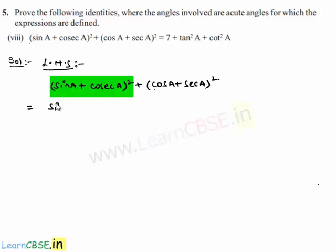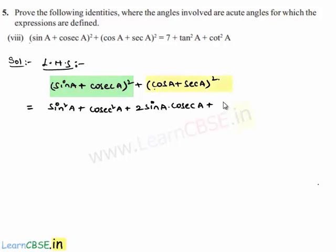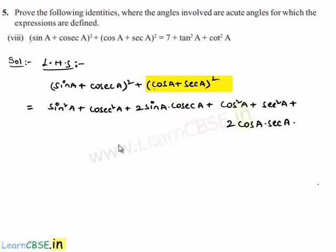Applying the expansion, we get sin squared a plus cosecant squared a plus 2 sin a into cosecant a, plus cos squared a plus secant squared a plus 2 times cos a into secant a. Let us now write sin squared a and cos squared a together.